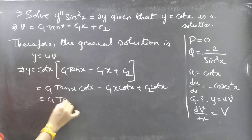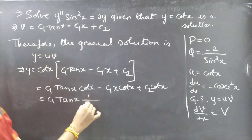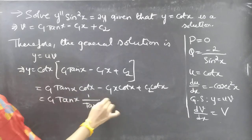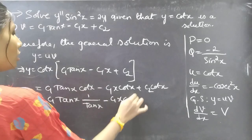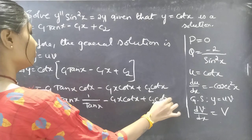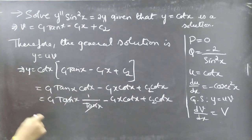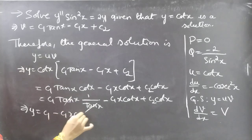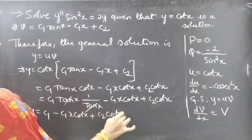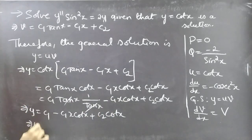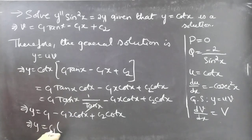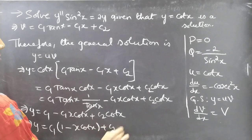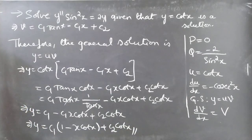Since cot x is the reciprocal of tan x, tan x · cot x = 1. So y = C₁ − C₁ x cot x + C₂ cot x. Taking C₁ common from the first two terms: y = C₁(1 − x cot x) + C₂ cot x. This is the general solution.